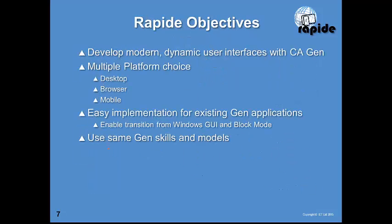That's the current state of affairs regarding user interfaces, and those are some of the key reasons we decided to build RAPID — to enable the development of modern dynamic user interfaces using CA Gen, providing a wider variety of platform choices for desktop, browser, and mobile applications. A key objective was to provide an easy implementation path for existing Gen applications, making it easy to migrate block mode or Windows GUI applications to RAPID using the same Gen skills and models you're already familiar with.